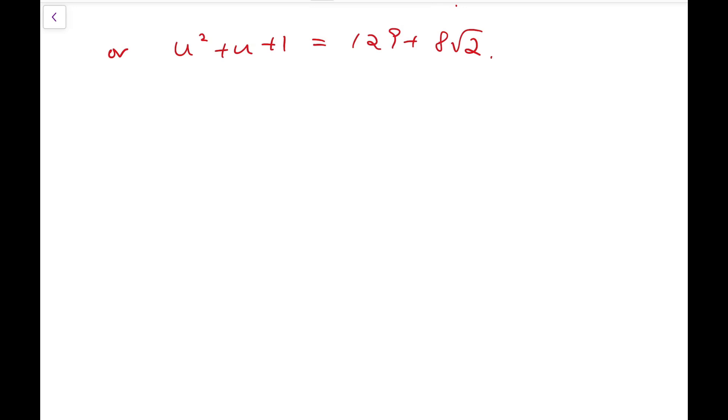Now, for the second case, we have u squared plus u to be 128 plus 8 root 2. So that means u squared plus u minus this number is equal to 0.